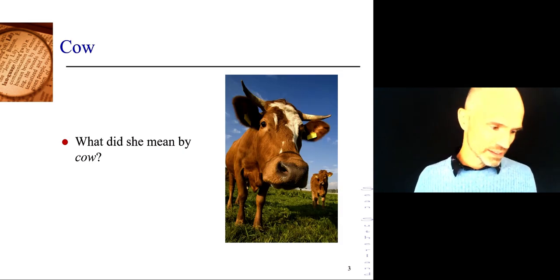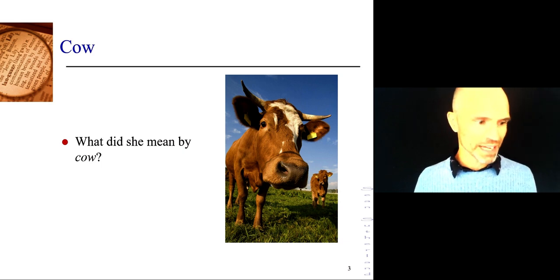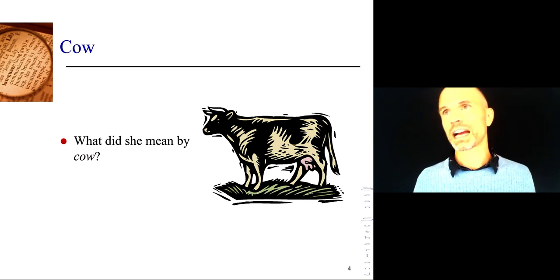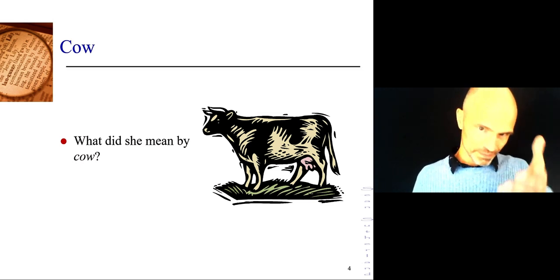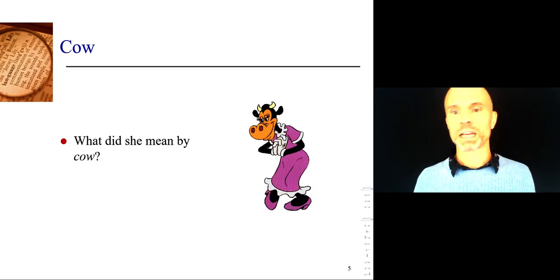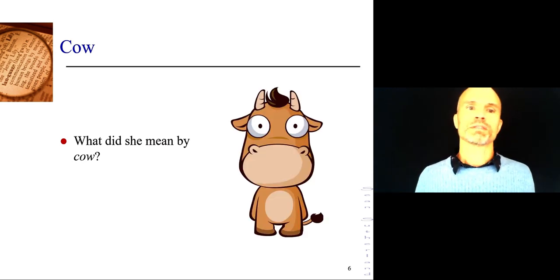The denotation of cow, cow denotes this, right? A four-legged bovine farm animal is the denotation of cow. Whether it's a real cow or a photograph of a real cow, and pictures of cows and sort of humanoid cows. There's the denotation of cow centers on that, the bovine four-legged farm animal.